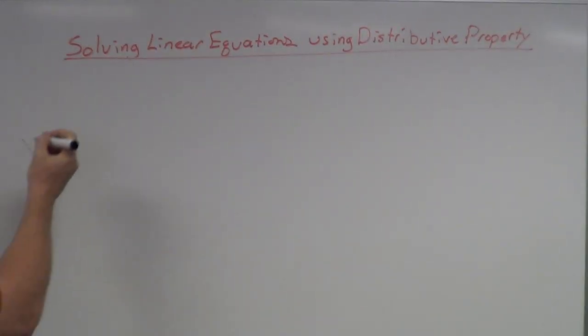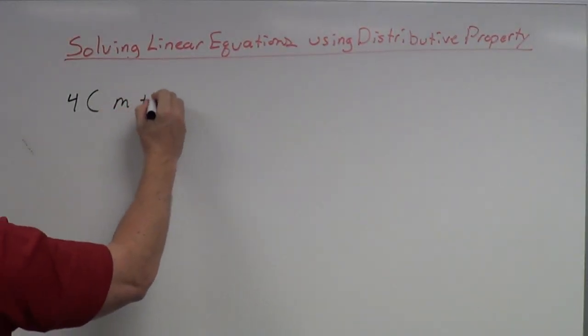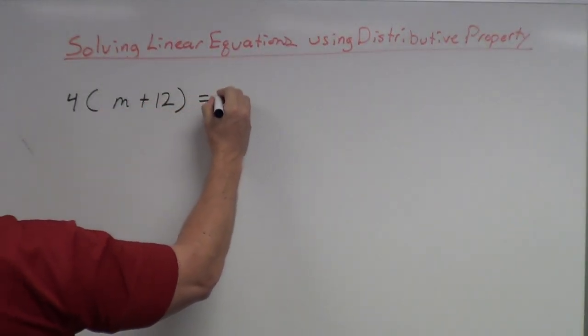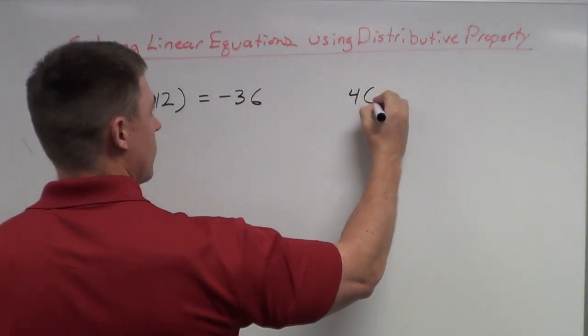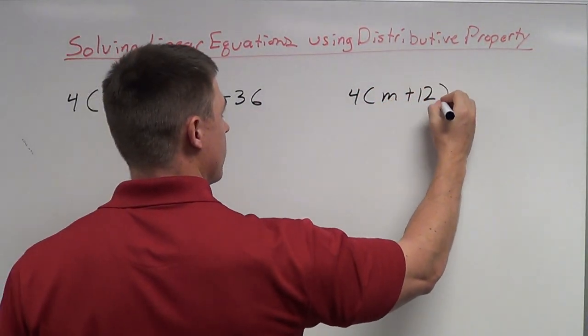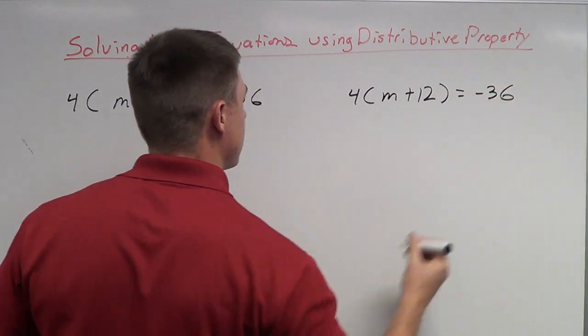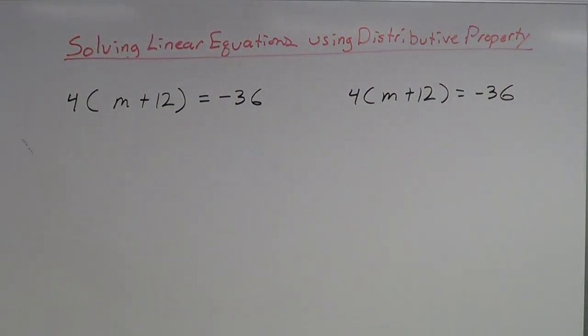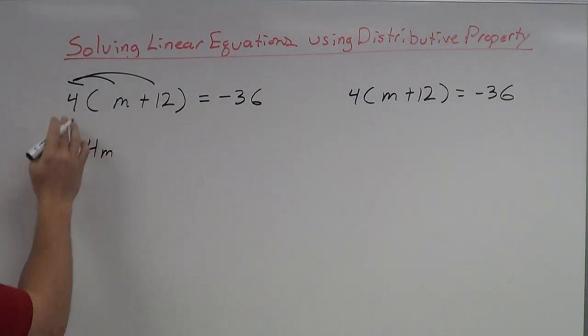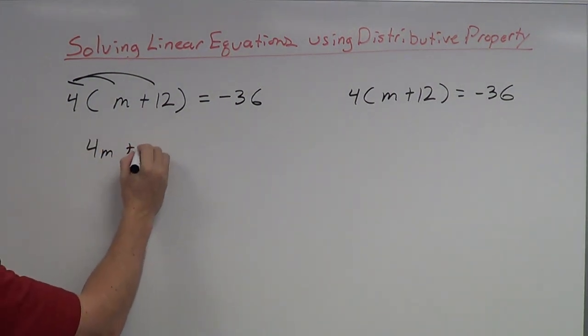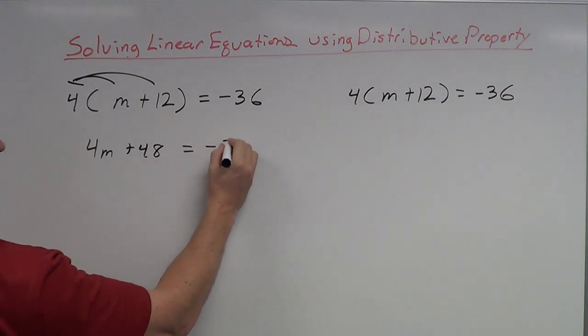once with distributive property and once without. This one's kind of similar. 4 times m plus 12 equals negative 36. Alright, so again, I'm going to go through this kind of quickly. So the first thing I'm going to do is I'm going to distribute this 4 times everything inside. So 4 times m is 4m. 4 times 12 is 48 equals negative 36.